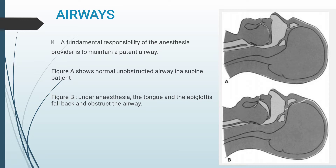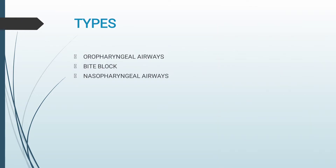Moving on to airways. The fundamental responsibility of an anesthesia provider is to maintain a patent airway. Figure A shows the normal unobstructed airway in a supine patient. Figure B shows that under anesthesia, the tongue and the epiglottis fall back and obstruct the airway. Types of airways are oropharyngeal airways, bite block, and nasopharyngeal airways.